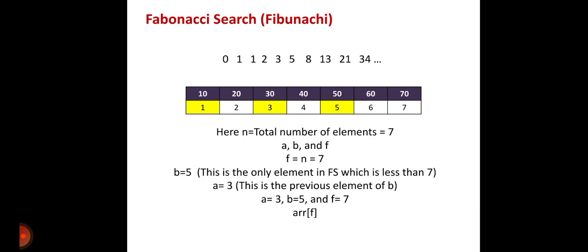This series is written in this way — 0 and 1 are the two base numbers. The next one is written as 1 plus 0, which is 1. Then 1 plus 1 is 2. Then 2 plus 1 is 3, 3 plus 2 is 5, 5 plus 3 is 8, 8 plus 5 is 13, and 13 plus 8 is 21. So in this way, the Fibonacci series is written.